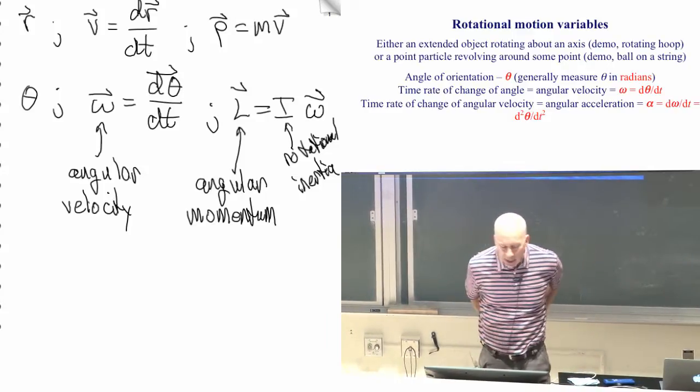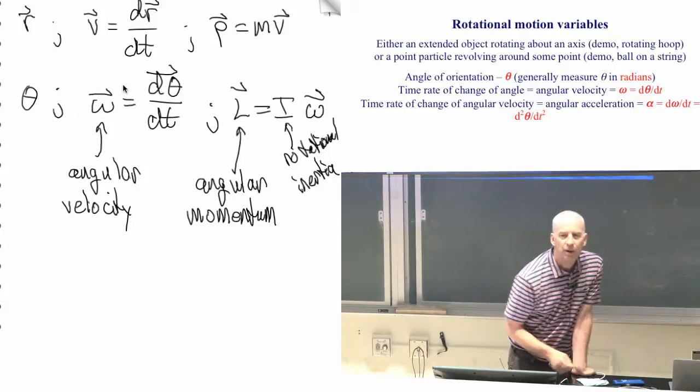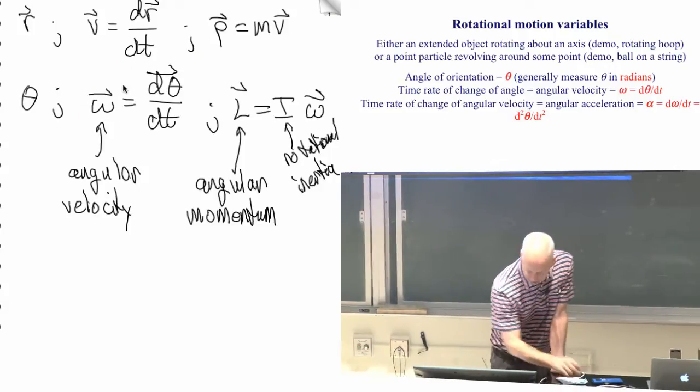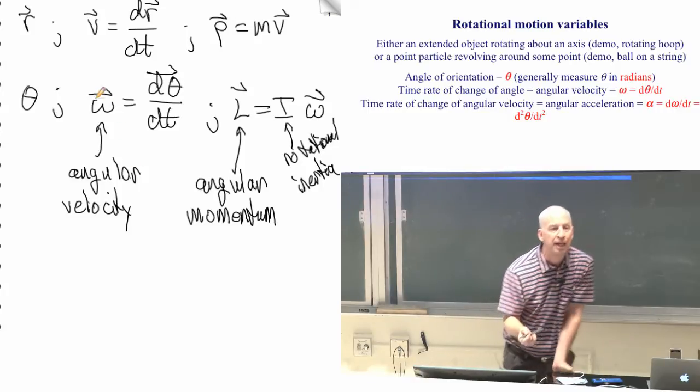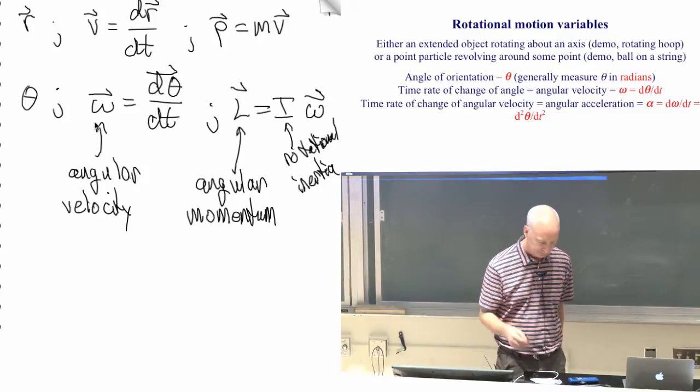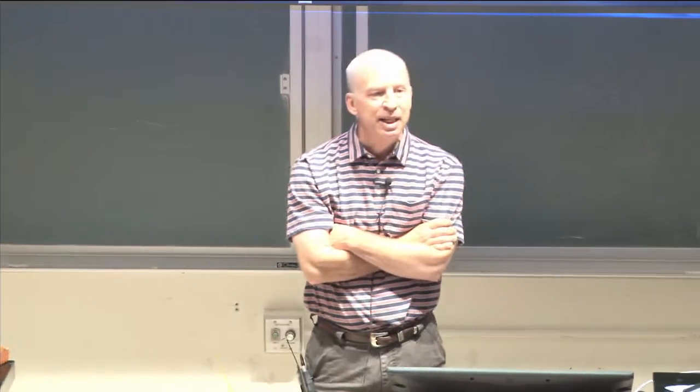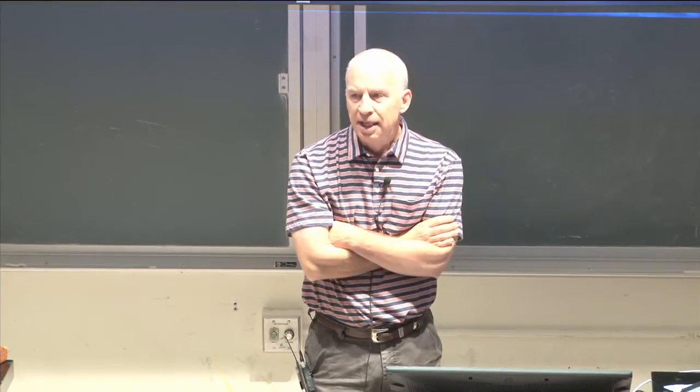So I put a vector for omega. Omega has a... this, by the way, this angular velocity is the Greek letter omega. The little Greek letter omega. It's not a w, it's an omega. I put a vector over that because angular velocity has a direction.